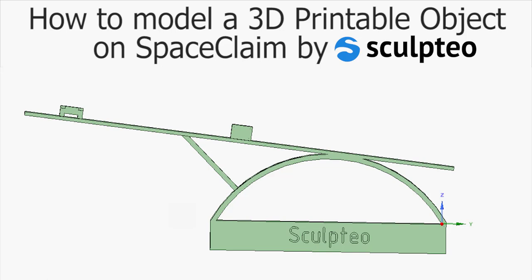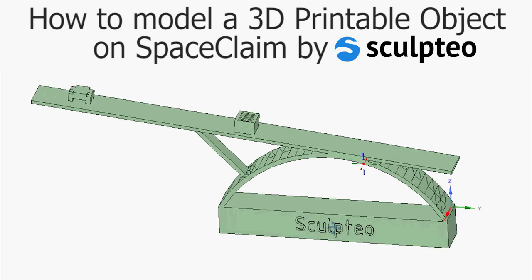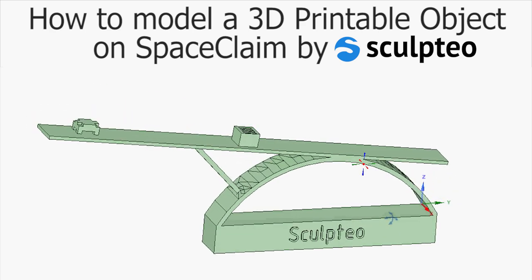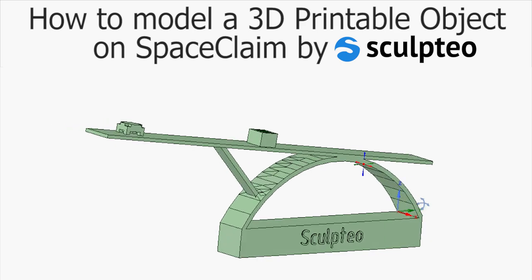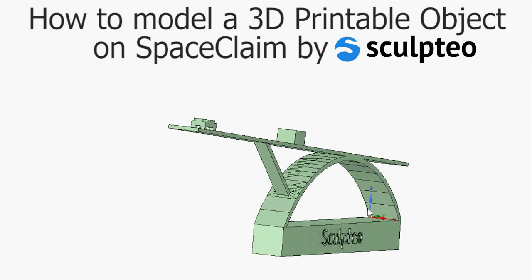Hi everyone and welcome to the SpaceClaim tutorial by SQTO. Today we're going to see how to model a 3D printable object. Please note that this tutorial is aimed at people who are already comfortable with modeling in SpaceClaim and want to learn more about best practices when modeling for 3D printing. I'm going to demonstrate some of these best practices by creating a bridge with a car and a sphere in a box on it, step by step. Let's get started!